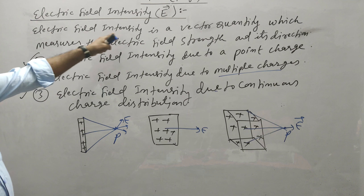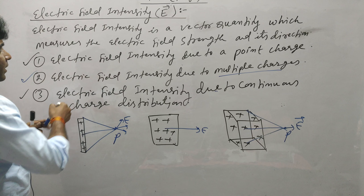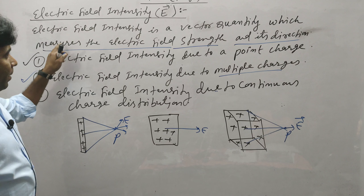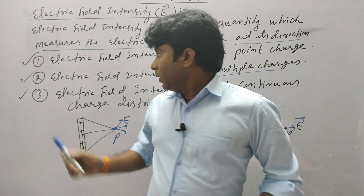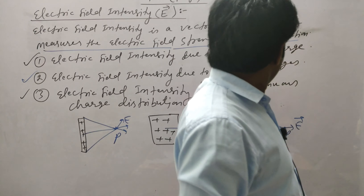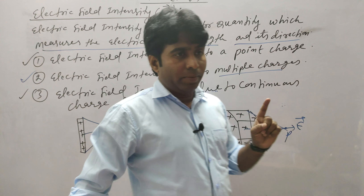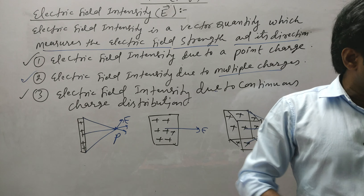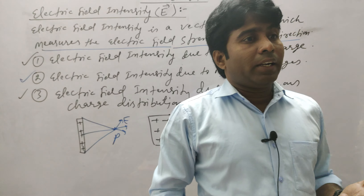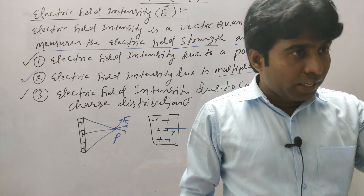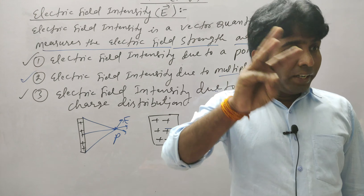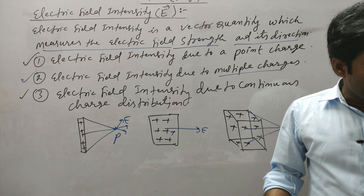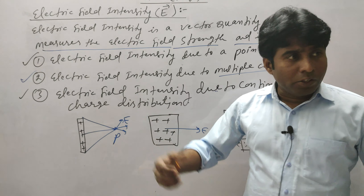So it is now clear what we are going to discuss. Electric field intensity is a vector quantity which measures the electric field strength and its direction. The three cases we will cover are: electric field intensity due to a point charge (single charge), second — due to multiple charges, and third — due to continuous charge distribution. And within continuous charge distribution, there are three sub-cases: linear charge distribution, surface charge distribution, and volume charge distribution.